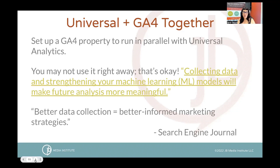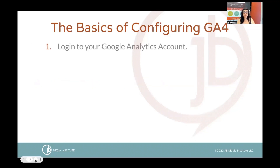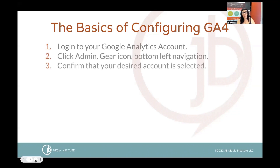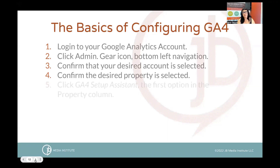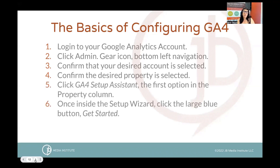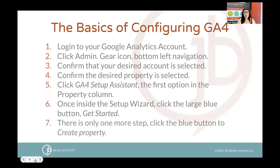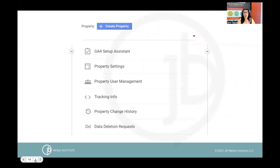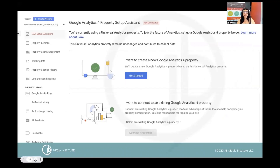You're able to let the AI and machine learning start their work by getting these things running together. The overall idea is better data collection means better informed marketing strategies. The basics of configuring GA4: I've outlined them for you - we don't have time today to dig into these in detail, but you can use this slide deck as a literal reference. If you have Universal Analytics, go into your property and use the setup wizard to actually create your GA4 property and get the information you need to put the code on your website.